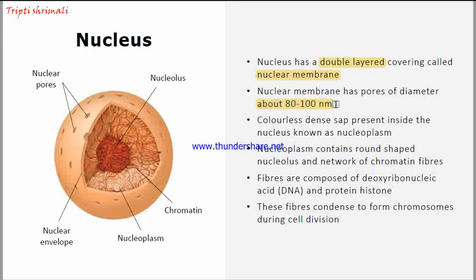Inside the nucleus there is a colorless dense sap present, and that colorless dense sap is known as nucleoplasm. The nucleoplasm contains a round-shaped nucleolus.